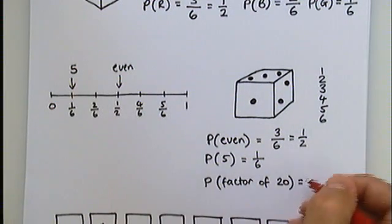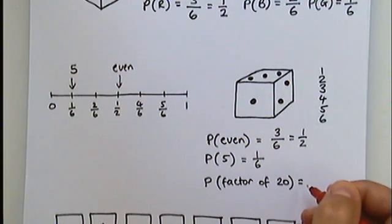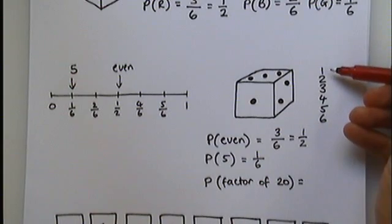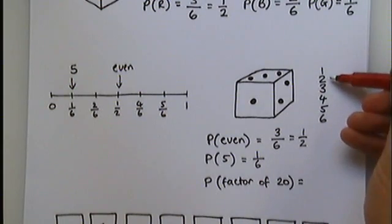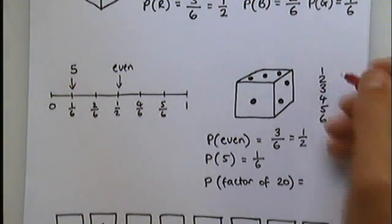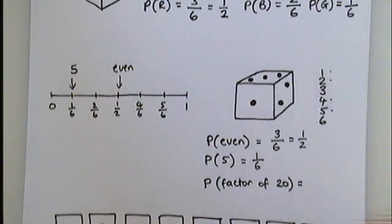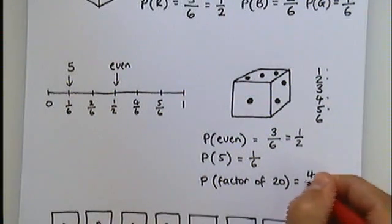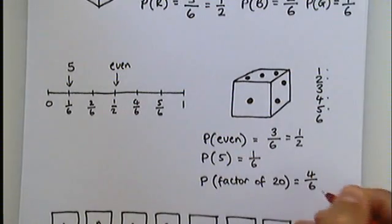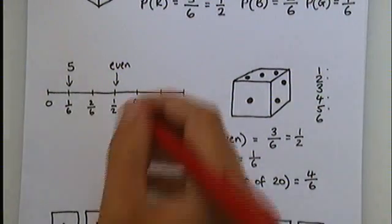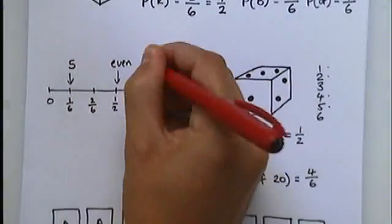And the probability of getting a factor of 20. Remember, a factor is a number that goes into 20. So 1 goes in 20 times, 2 goes in 10 times, 4 goes in 5 times, and 5 goes in 4 times. There are four out of six outcomes which are factors of 20, and therefore that probability goes there on the number line.